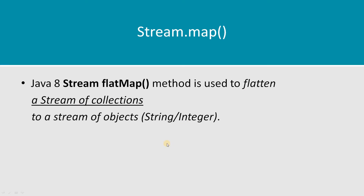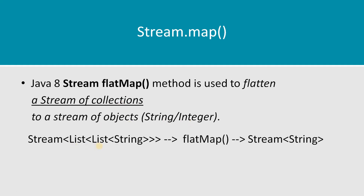FlatMap function is used to flatten a stream of collections to a stream of objects like String or Integer. So I have a list and each element of my list is itself a list — a kind of complex data structure. We use FlatMap to convert this complex data structure into a stream of String type values or a stream of Integer type values.